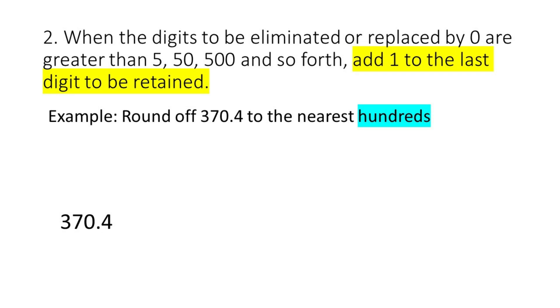Here is an example related to rule number 2. If we round off 370.4 to the nearest hundreds, this means 3 is the digit to be retained, and 70.4 shall be replaced by 0s. Considering that 70.4 is greater than 50, we shall add 1 to the digit to be retained, hence our answer should be 400.